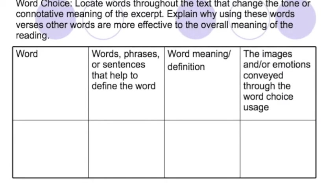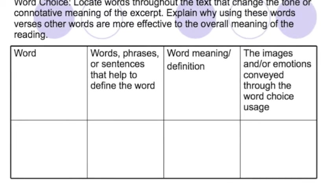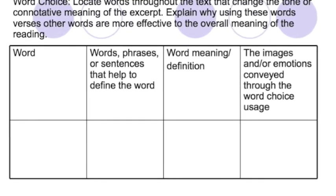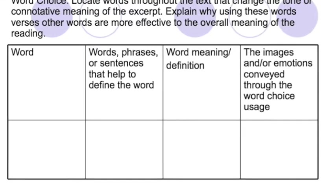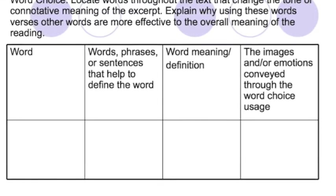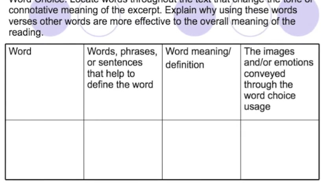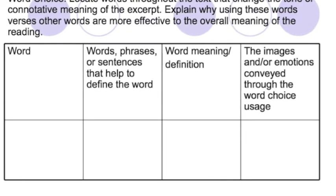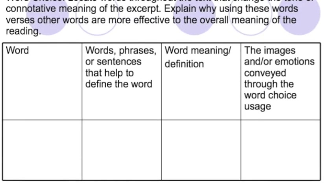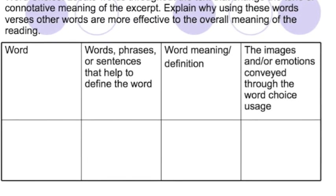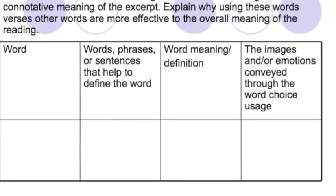For the word choice, they need to locate words throughout the text that change the tone or the connotative meaning of the overall excerpt, and explain why using these words versus other words are more effective to the overall meaning of the reading. They need to create a chart again — this time write the word, words or phrases or sentences that help to define that word, the word meaning or the definition, and the images and or emotions conveyed through that word choice.